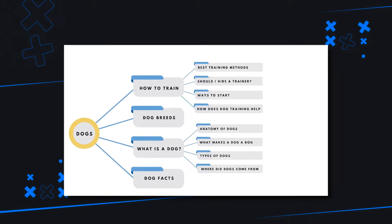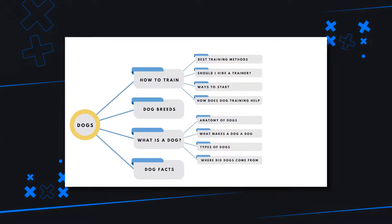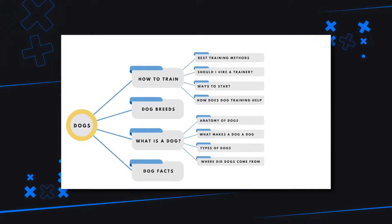So the first part is you need to create a hierarchical structure around your topic — dogs in this case — and then the questions asked about that topic. For instance, I'll be talking about how to train dogs, dog breeds, what is a dog, and dog facts, then breaking those down further. For 'how to train,' we have: best training videos, should I hire a trainer, ways to start, how does dog training help — and so on for each topic. As you create this topical map, start with that structure using a Google Doc or any tool where you can list the hierarchy with indentation. Just use whatever is easiest and free.